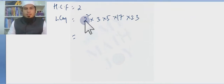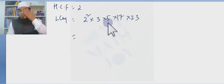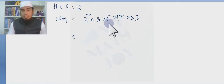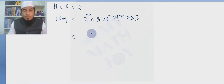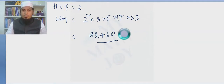Multiplying to get the LCM: 2 squared is 4, times 3 is 12, times 5 is 60, times 17, times 23 — multiplying these out gives us 23,460. So LCM is 23,460 and HCF is 2.